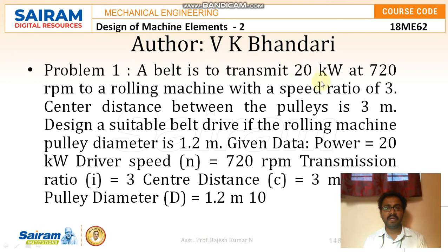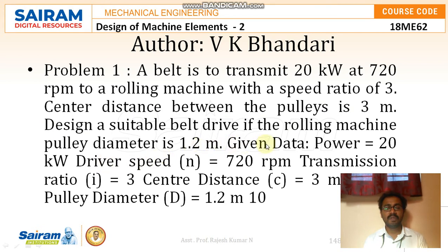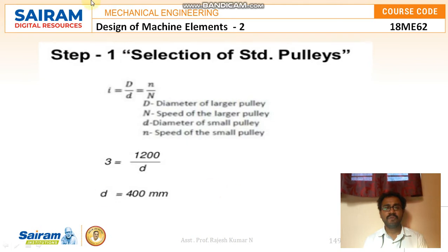Moving to the first problem: a belt is to transmit 20 kilowatt at 720 rpm to a rolling machine with a speed ratio of 3. The center distance between the pulleys is 3 meters. Design a suitable belt drive if the rolling machine pulley diameter is 1.2 meters. Given data: Power = 20 kW, driver speed = 720 rpm, transmission ratio i = 3, center distance C = 3 m, driven pulley diameter D = 1200 mm.